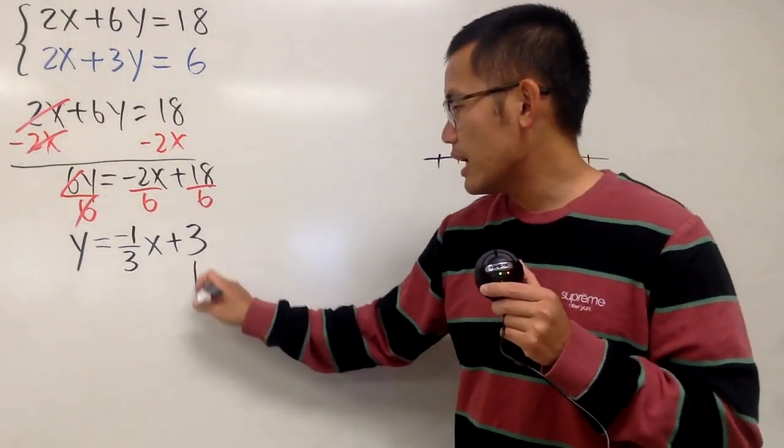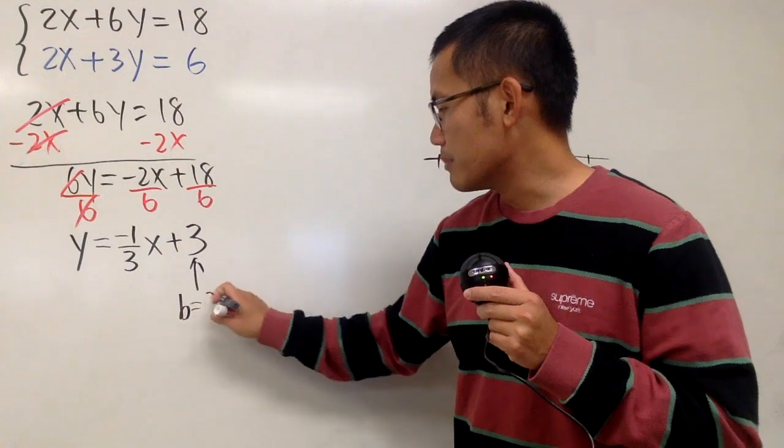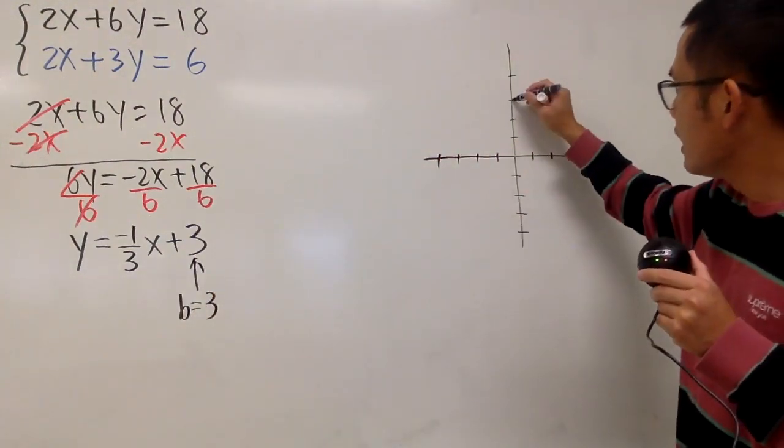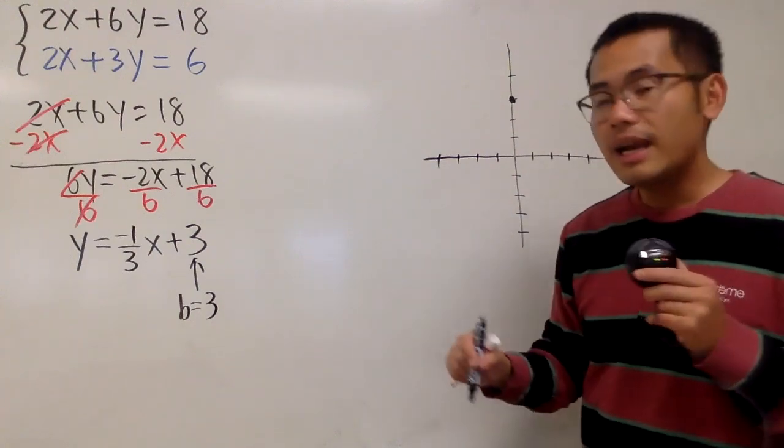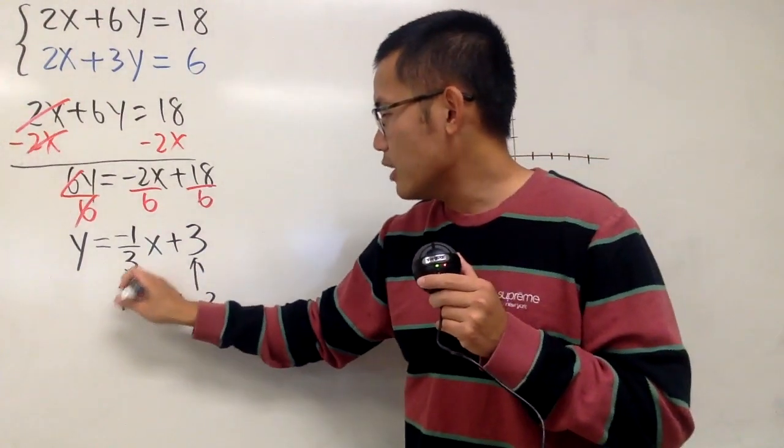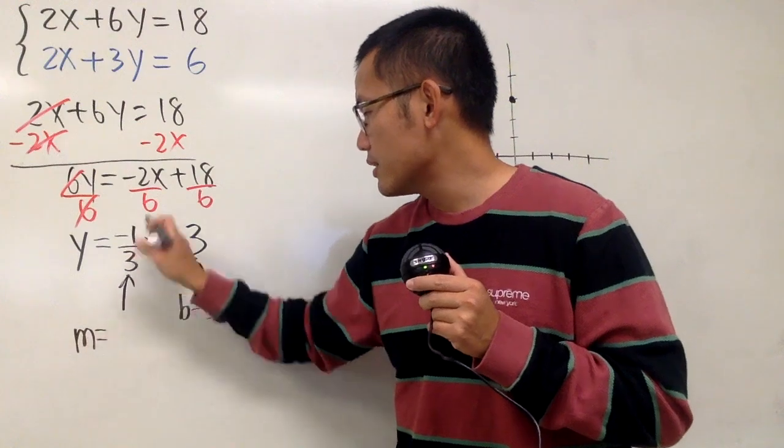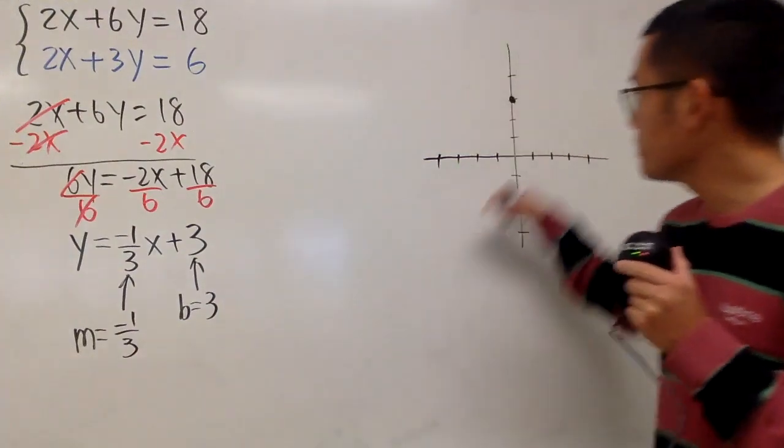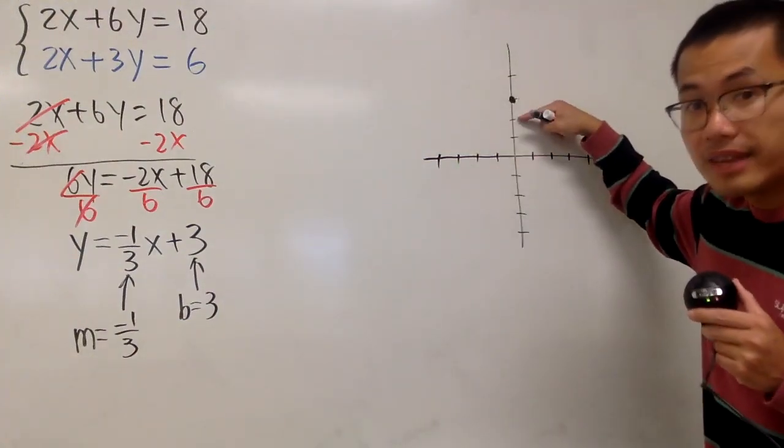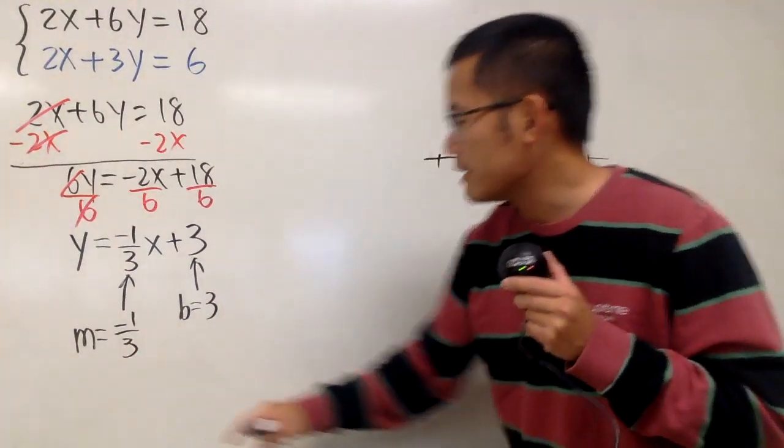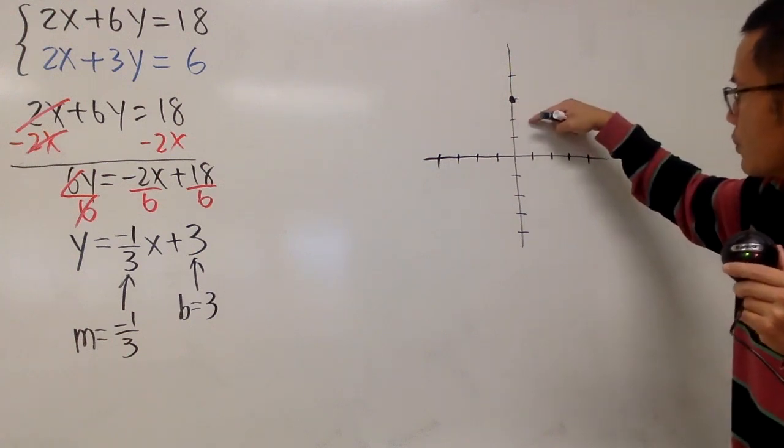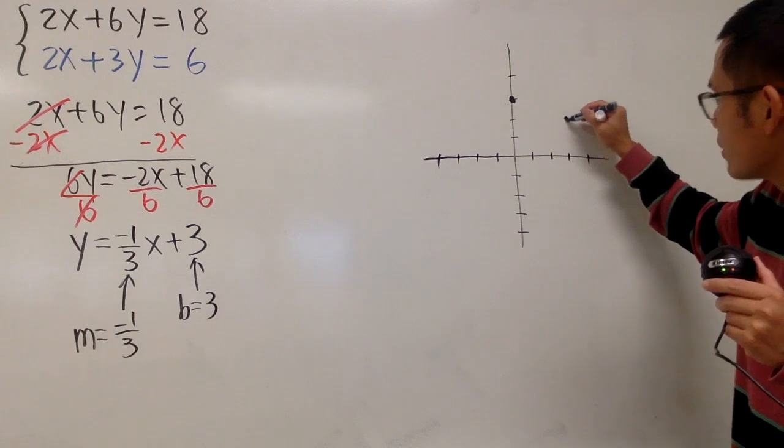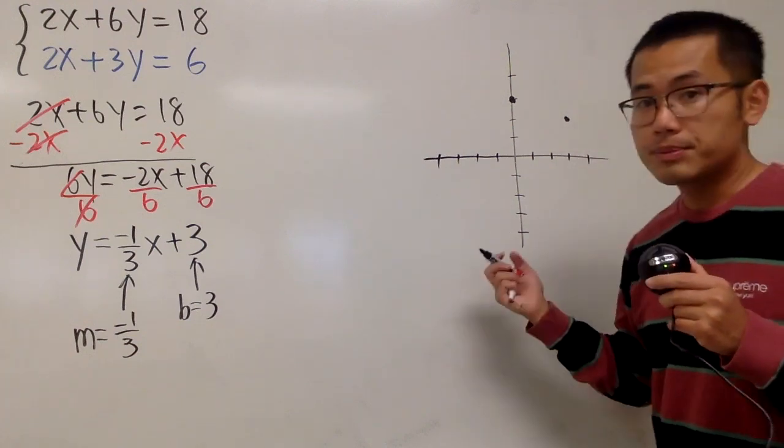So first, we start at the y-intercept, which is the b, which is the 3. That means I go to the y-axis, 1, 2, 3, and here is my first point. And then for the second point, look at the slope. The slope here is negative 1 over 3, meaning that we go down one time from here, and then we move to the right three times. So go down one time and then move to the right. 1, 2, 3, and then we put another point right here. So that's pretty much the idea.